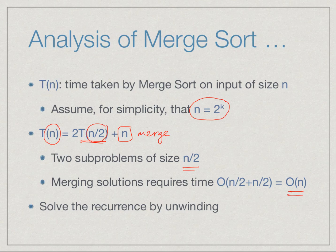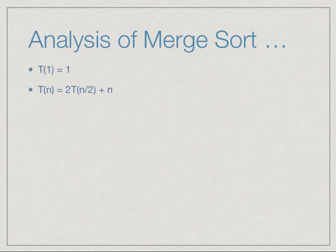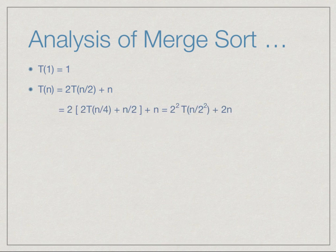As with binary search and recursive insertion sort, we can solve this recurrence by unwinding it. We start with the base case: if we have a list of size 1 then we have nothing to do, so T(1) is 1. And T(n) in general is 2 times T(n/2) plus n.